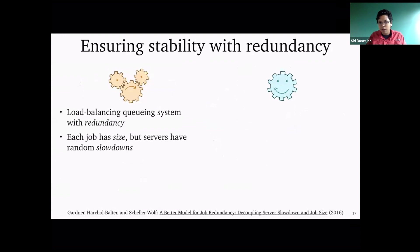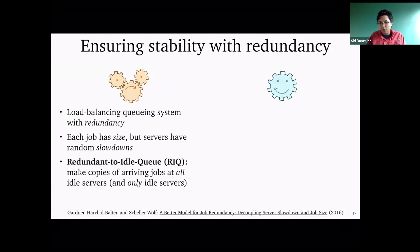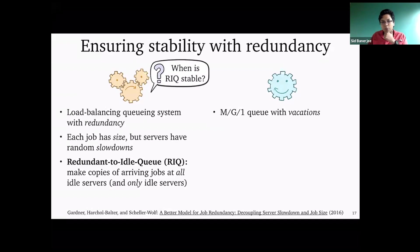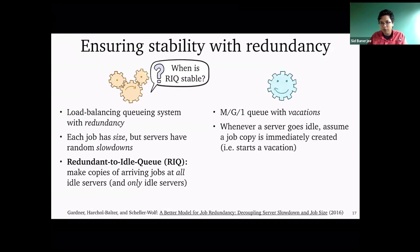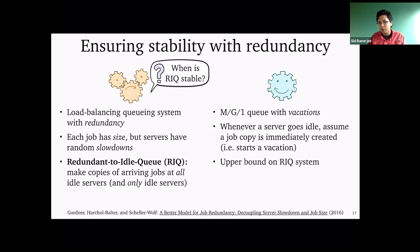The interesting idea is to come up with a coupling that relates this system to an easier one. Instead of looking at idle jobs sent to idle servers, we look at a single-server queue with vacations. Whenever the single server goes idle while working on a certain job, we take that job and create copies — starting a vacation process. You can show that even though the system is simpler, this actually gives an upper bound on the Redundancy-IQ system, and you can use this to argue about the stability of the original system. This is an example of a system with simpler dynamics used to analyze a more complicated performance measure: stability under a certain policy.